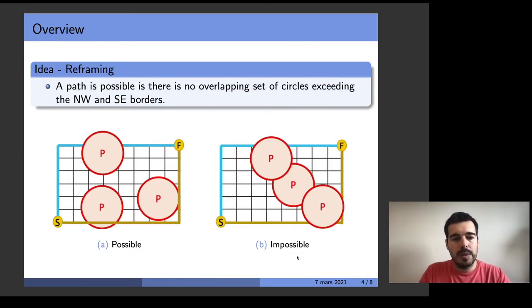Let's reframe this. The starting position is in the lower left corner and the finished position is in the upper right corner. A path is possible if there are no overlapping set of circles exceeding both borders. We can see in the image on the right that these three circles overlap and exceed both borders. This means that there is no possible way that we can pass through without going closer than distance r.